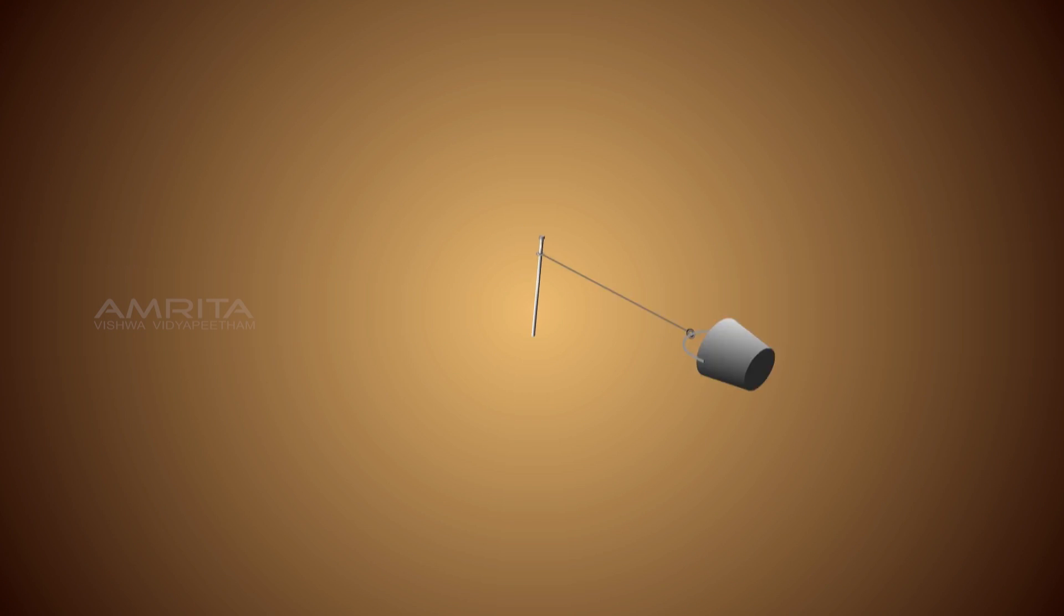A continuously moving body in a circular path will change its velocity to accelerate itself. The force that causes this acceleration and keeps the body moving along the circular path towards the center is called centripetal force.